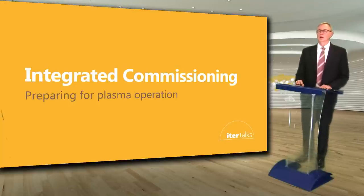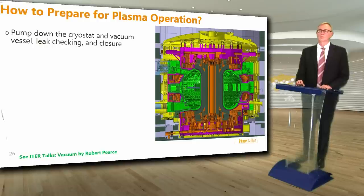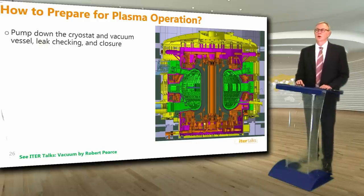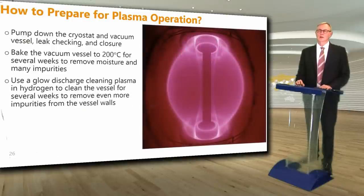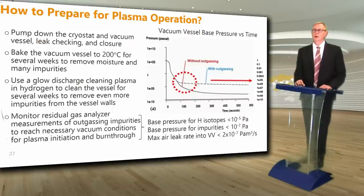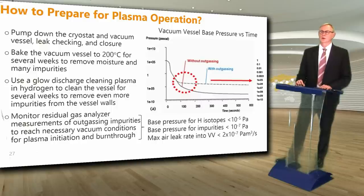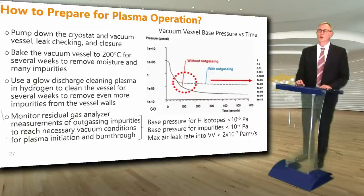Once the tokamak is assembled and the cryostat is closed, we will begin integrated commissioning to prepare for ITER operation. First, we'll pump down the cryostat and vacuum vessel and check for leaks. Then we'll bake the vessel to 200 degrees centigrade for several weeks to remove water and many impurities. We will run a low-density, low-temperature glow-discharge cleaning plasma in hydrogen to remove more impurities from the vessel walls. Then we'll monitor residual gas analyzer measurements of outgassing impurities to reach the necessary vacuum conditions defined in terms of achieving low base pressure for hydrogen isotopes, even lower pressure for impurities, and below a maximum air leak rate.